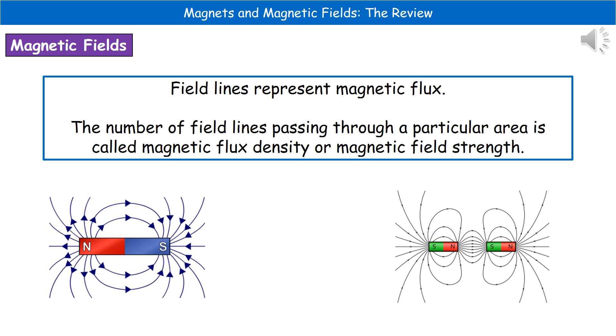So one thing you've probably seen at some point are these diagrams that show the magnetic fields around the bar magnet. Now, the lines that we've actually got on there represent magnetic flux. And the key thing that you can identify just by looking at that diagram is that the number of field lines that we've got passing through a particular area is actually a relation to the actual strength of that magnetic field. And we refer to that as magnetic flux density or magnetic field strength.